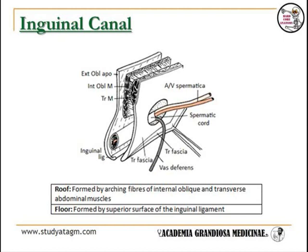Contents of the inguinal canal: In males, the spermatic cord and the ilioinguinal nerve. In females, the round ligament of the uterus and the ilioinguinal nerve.